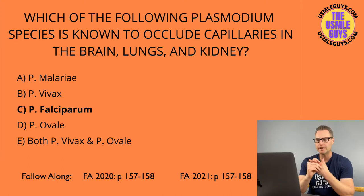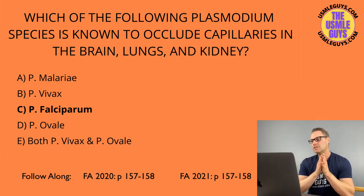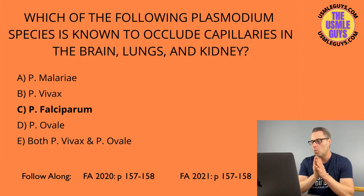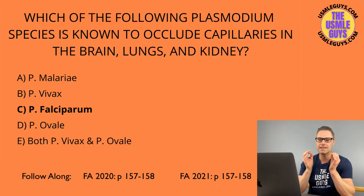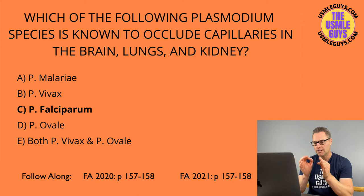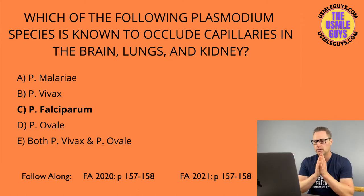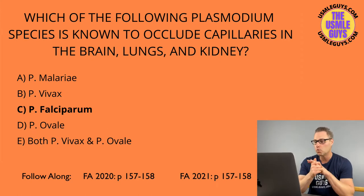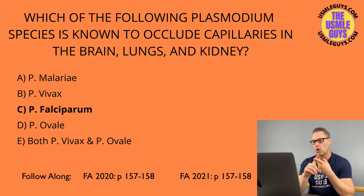Babesiosis is transmitted via the Ixodes tick — the same vector as Borrelia burgdorferi and Anaplasma. Diagnosis can be confirmed with the presence of a ring form or the classic Maltese cross on blood smear, and you're going to treat this with atovaquone plus azithromycin.